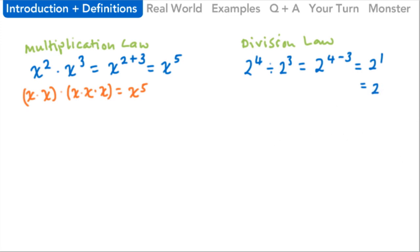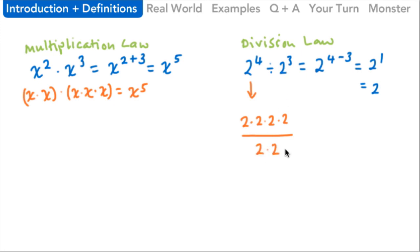If we look at the work that goes into this, we take two to the fourth power written as two times two times two times two, and divide by two to the third power — two times two times two. Division and fractions are pretty much the same, so we write this as a fraction. We've got common factors on the top and the bottom, so we can cancel them out because each pair equals one. That leaves us with that two all on its own.